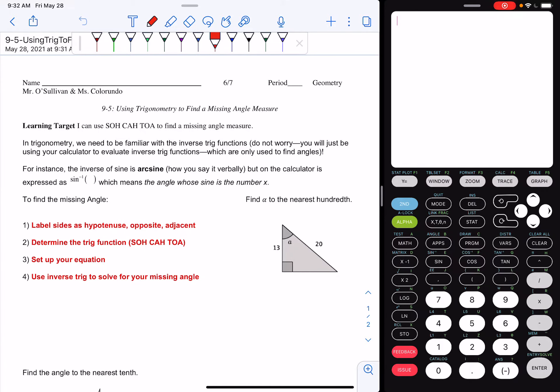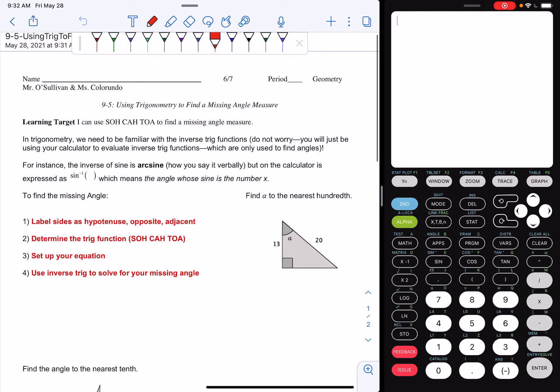Hello BYW students, it's Mr. O'Sullivan. Today we're going to be looking at lesson 9-5 using trigonometry to find a missing angle measure. Today's learning target is I can use SOHCAHTOA to find a missing angle measure.